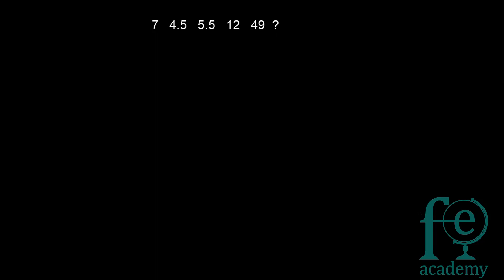Next question: the series is 7, 4.5, 5.5, 12, 49. Between 12 and 49 there is a huge difference, so multiplication is taking place. After 7 there is a decrease to 4.5, so the multiplicand must be less than 1. The most common probability is the multiplicand is 0.5. Try: 7 × 0.5 + 1 = 3.5 + 1 = 4.5. That works.